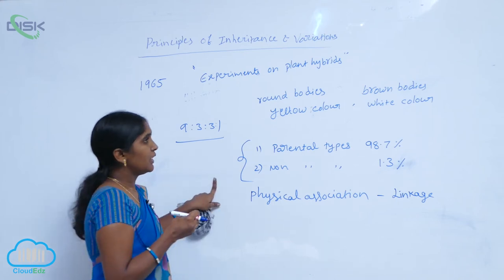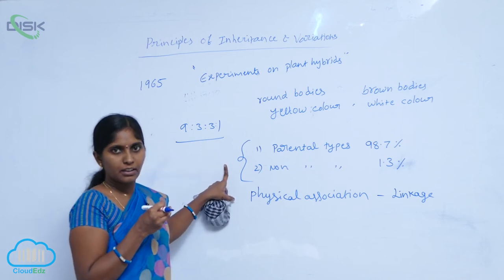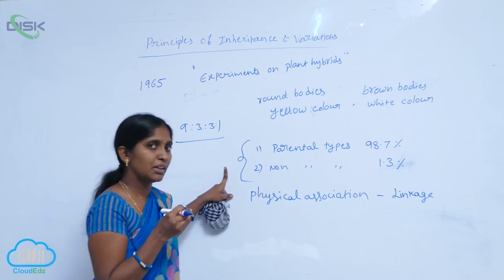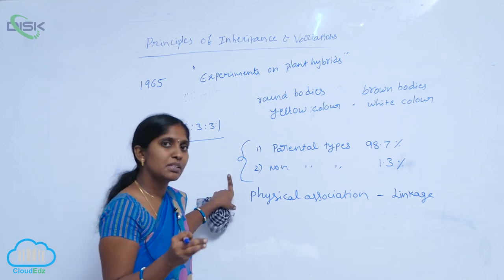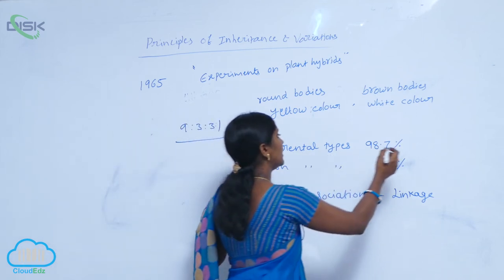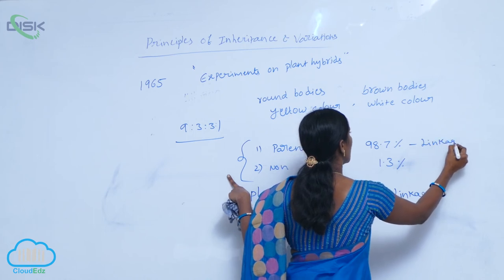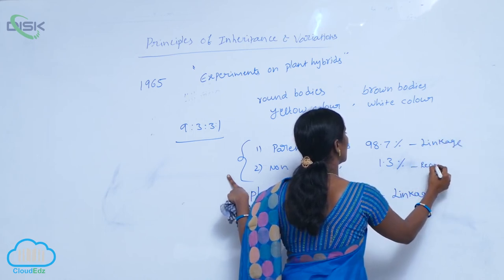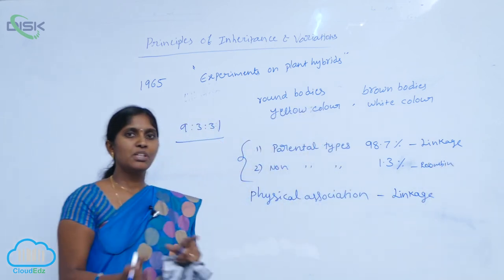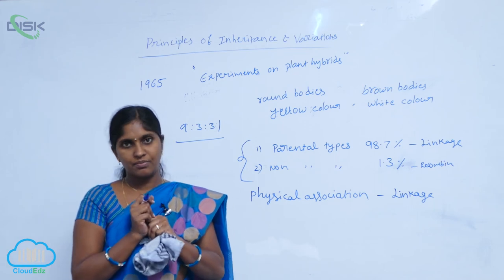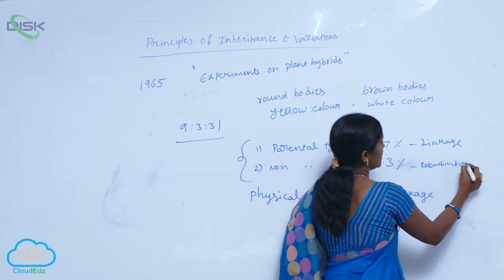In Morgan's experiment on Drosophila, 98.7% of results were parental type and only 1.3% were non-parental type, meaning the linkage here is high and the recombinants formed are low. He observed that linkage and recombination have an inverse relationship: a high rate of linkage means a low rate of recombination.